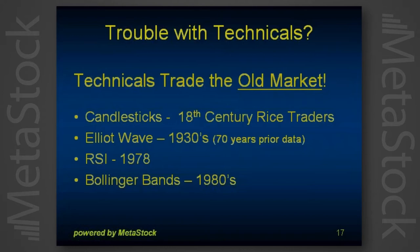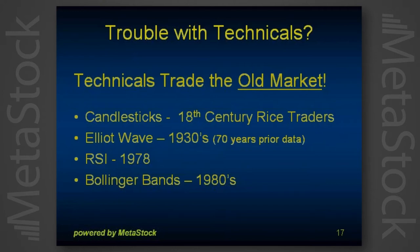A lot of people think technicals can save them. We like technicals because we're data-driven traders, but there's a problem: most technicals trade the old market. Candlesticks come from the 18th century — the Japanese rice traders. Elliott Wave sounds modern, but Elliott wrote that in the 30s using data from the Civil War to the 1930s. RSI was published in '78, Bollinger Bands just a couple years later. All the research that validated these technicals came from the old market — before these wild swings we see today. Our point of view is that using technicals is fine, but you've got to make adjustments to get them in sync with the pace of the new market.